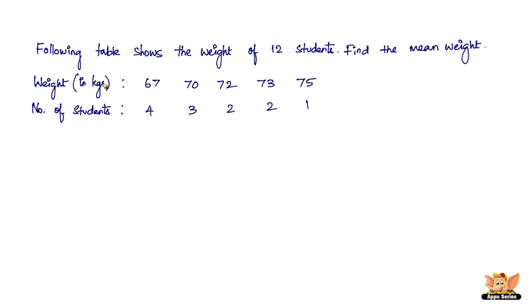The problem reads: the following table shows the weight of 12 students. There are 12 students split into 4, 3, 2, 2, and 1 based on their weights. 4 of them weigh 67 kg, 3 weigh 70 kg, 2 weigh 72 kg, another 2 weigh 73 kg, and 1 weighs 75 kg. We need to find the mean weight.